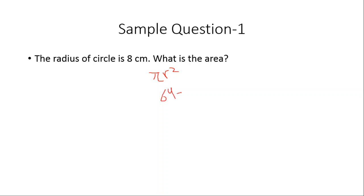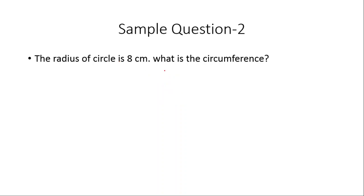So the area of this circle is 64π, which was very easy. Another easy example: the radius of the circle is 8 centimeters. What is the circumference? Circumference is 2πr, so 2π × 8, giving a circumference of 16π.